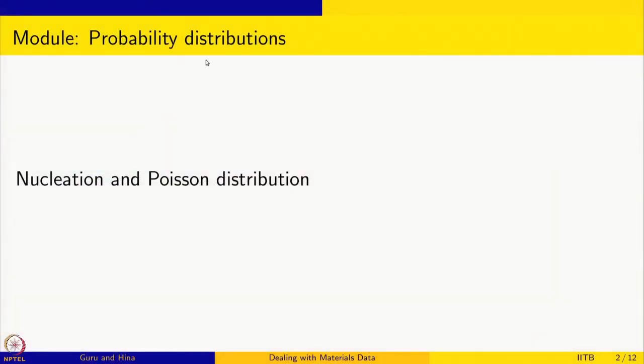Welcome to Dealing with Materials Data, a course on collection, analysis, and interpretation of data from material science and engineering. We are looking at the module of probability distributions, and in this session we are going to talk about the nucleation process and how it is related to the Poisson distribution.